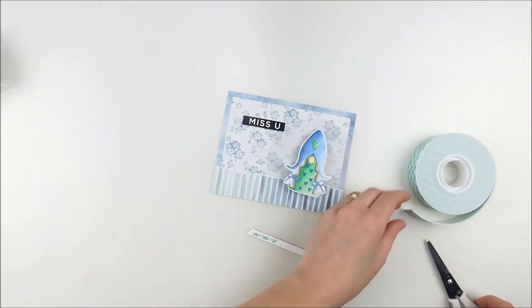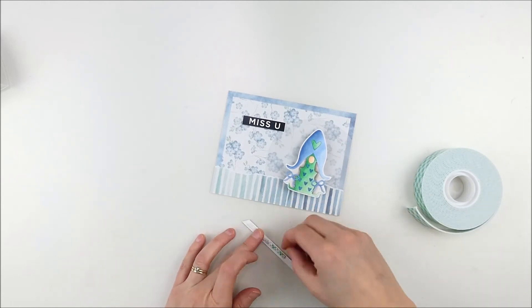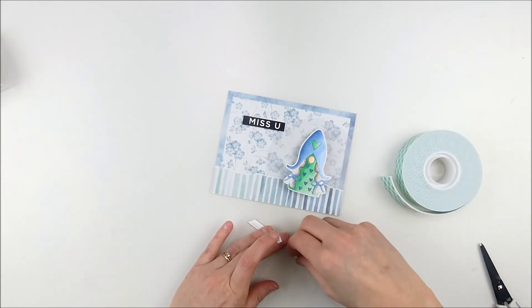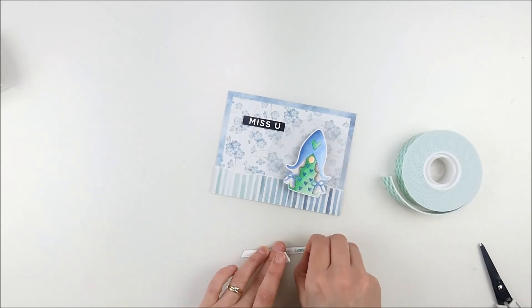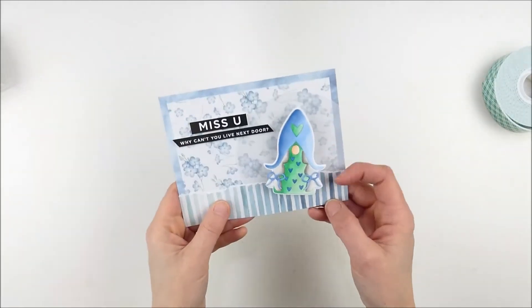Then I just trimmed down that bottom one to help it fit a little bit better and then super thin strips of foam adhesive as well on the back of that one. Get all the little pieces on there. I want to make sure it was all the way covered so it would hold in place really well and then I can tuck that into place.